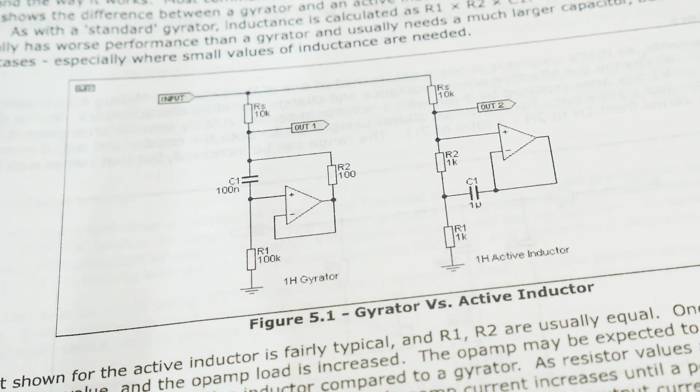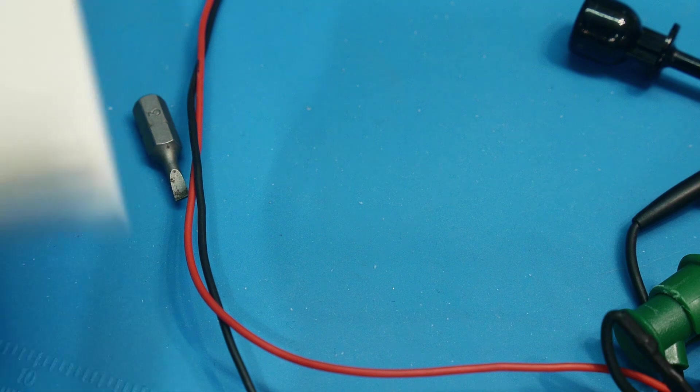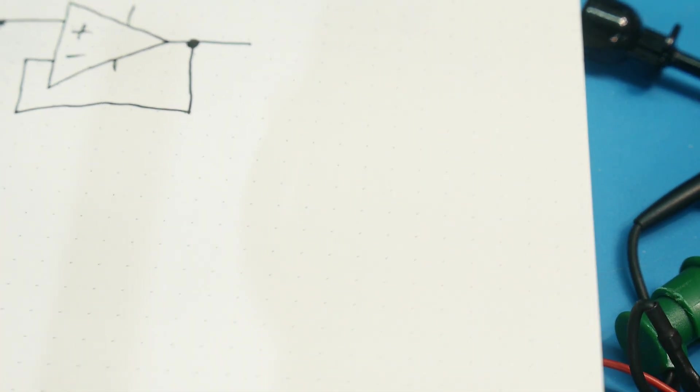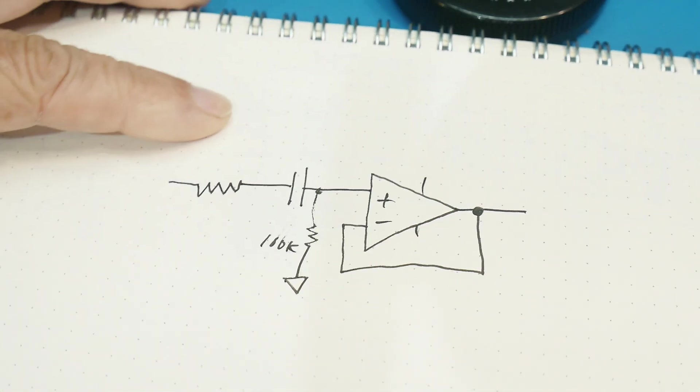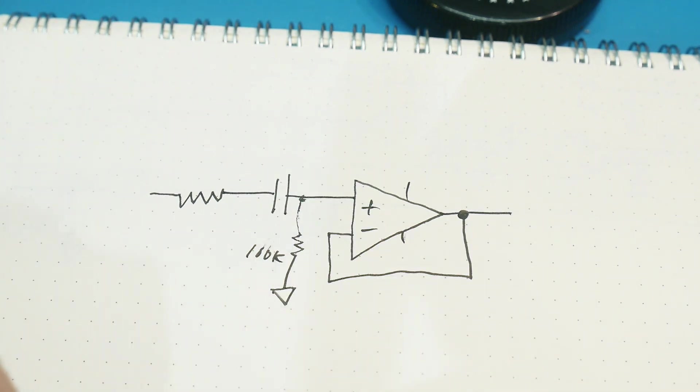Alright. So yeah, it's a bit strange. Let's take a look at the other drawing. Maybe that will help as well. Sometimes it's better to look at something two different ways and maybe it'll jog something in the brain, help something out. So this is what we have. This is not a gyrator.